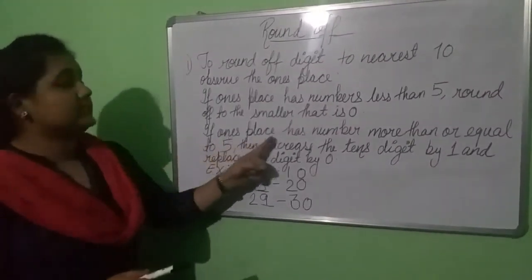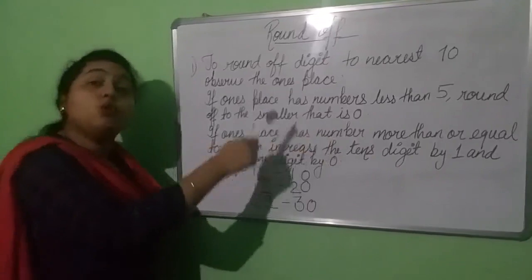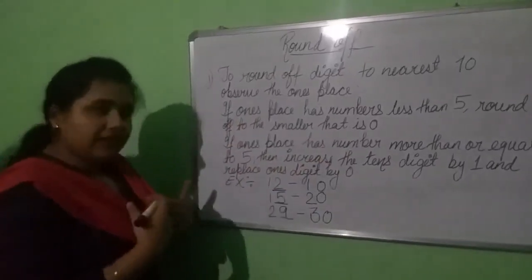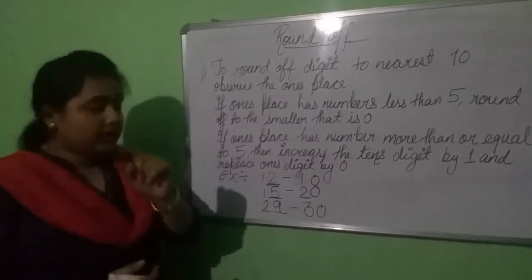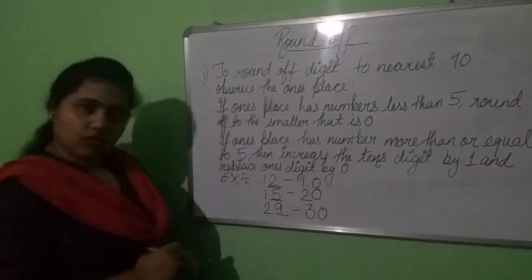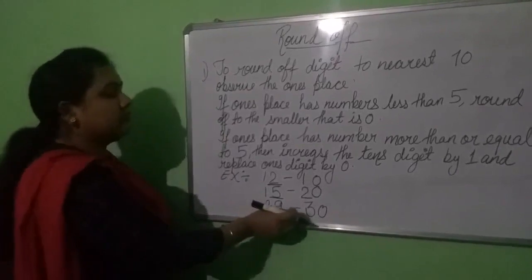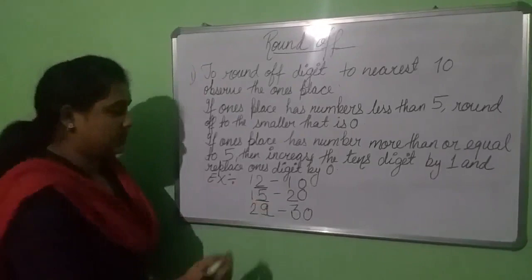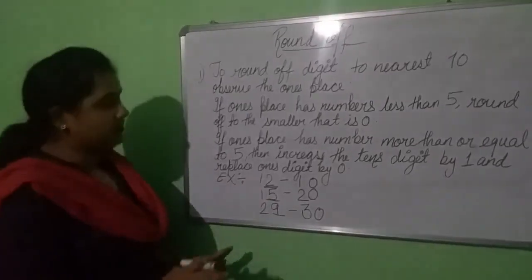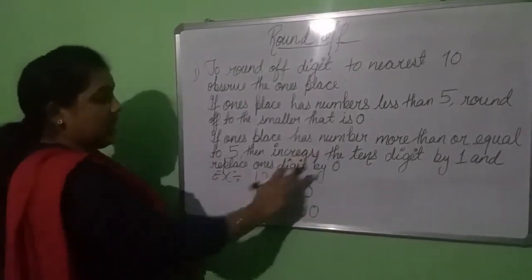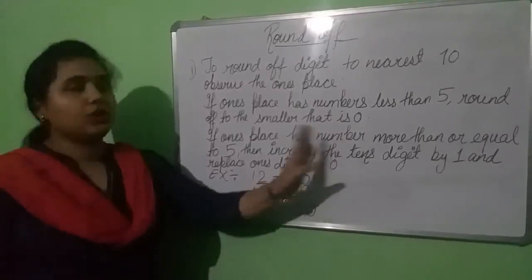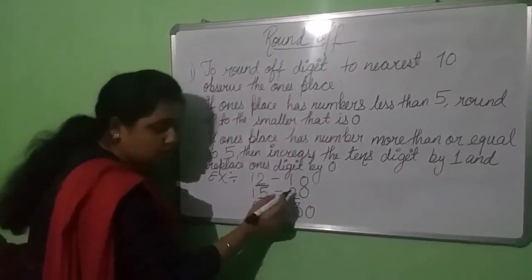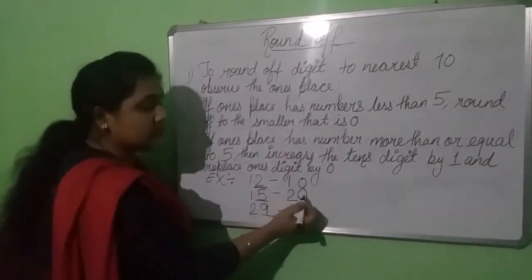If the 1's place has a number more than 5 or equal to 5, what do we have to do? We need to add 1 in the 10's digit, and at the 1's digit we are going to write 0. Here I have written 15. The digit 5 is equal to 5, so we add 1 at the 10's place: 1 plus 1 equals 2, and at the 1's place, 0. So 15 rounds up to 20.